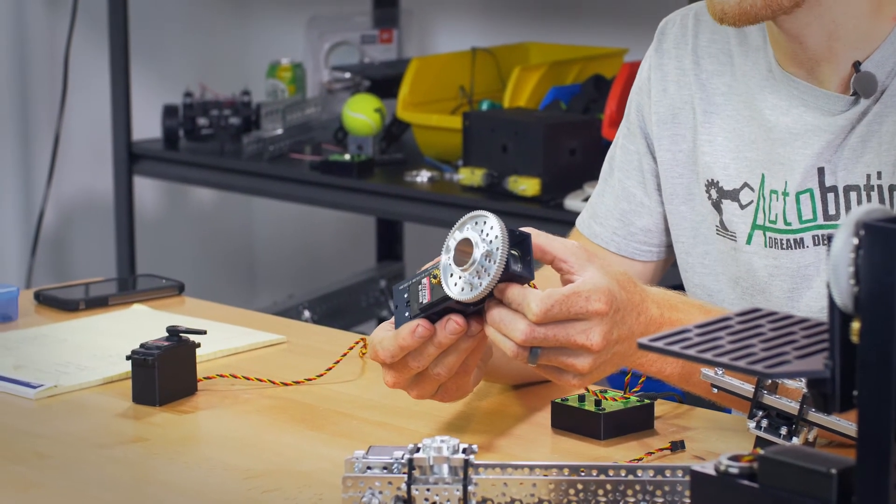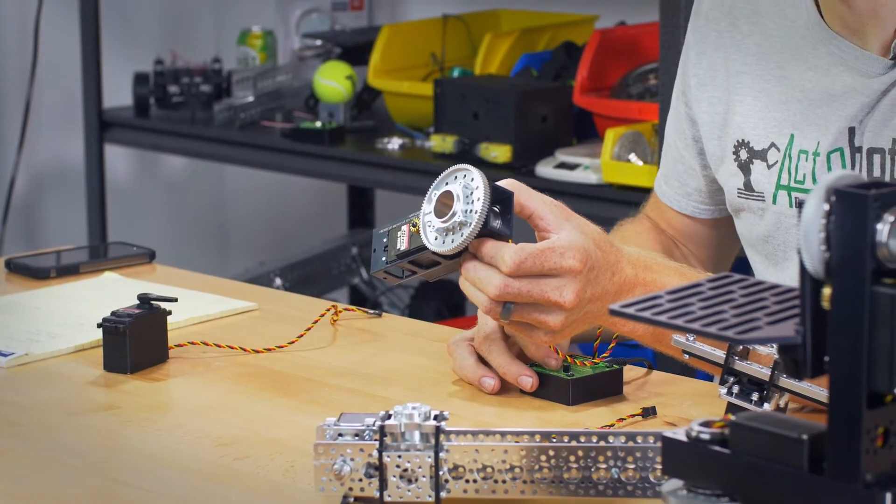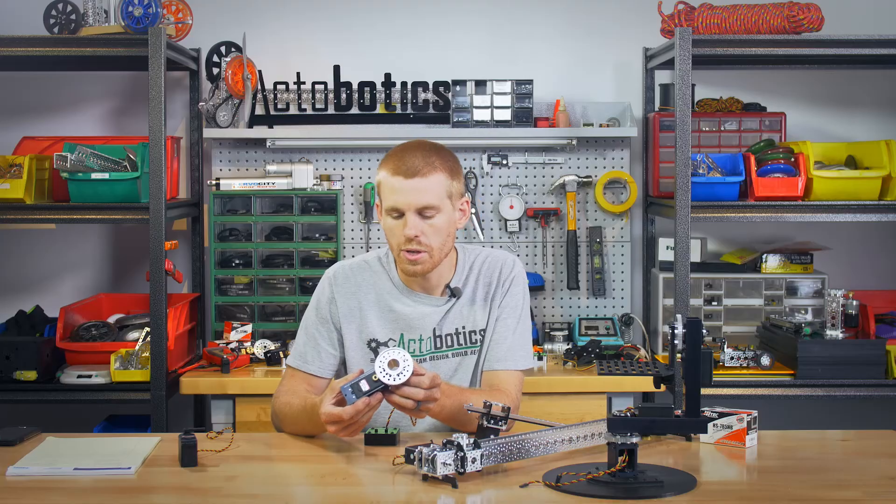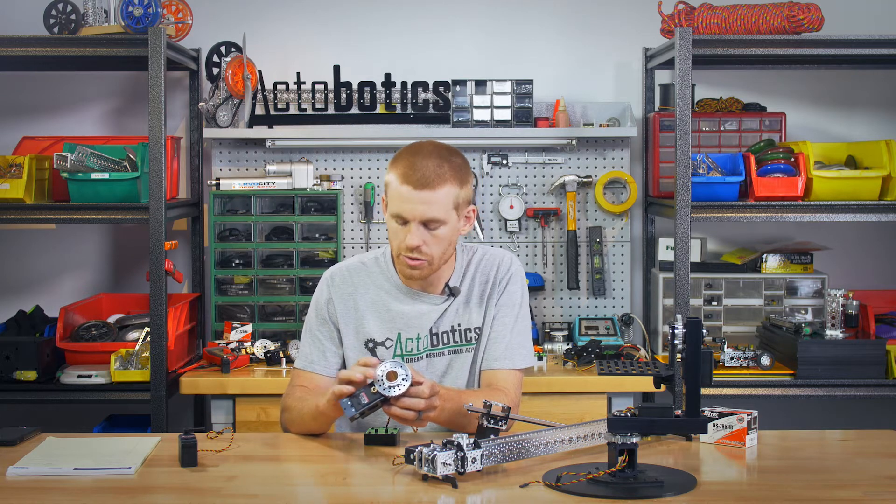So I went ahead and installed a 7 to 1 ratio on this gearbox. You can run any ratio from 2 to 1 all the way up to 7 to 1. 7 to 1 is going to give you the most torque and the most precision because you've geared it down in order to get less rotation out of the servo.